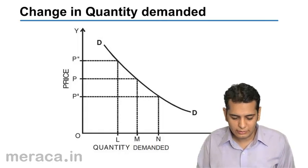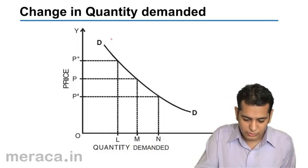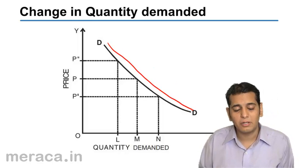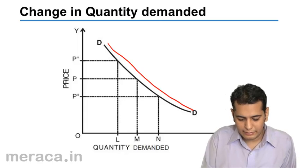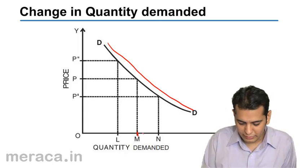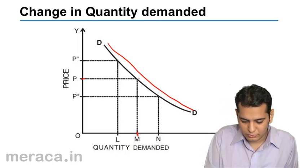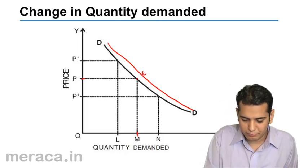Let's just revise quickly. This is our normal demand curve, and we are consuming quantity M currently at price P. So this is our equilibrium point.